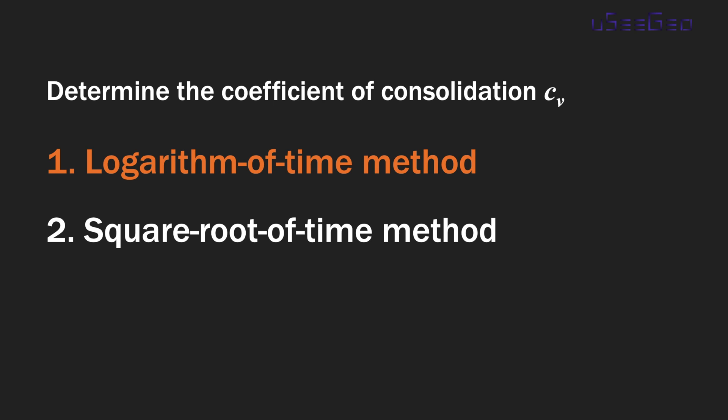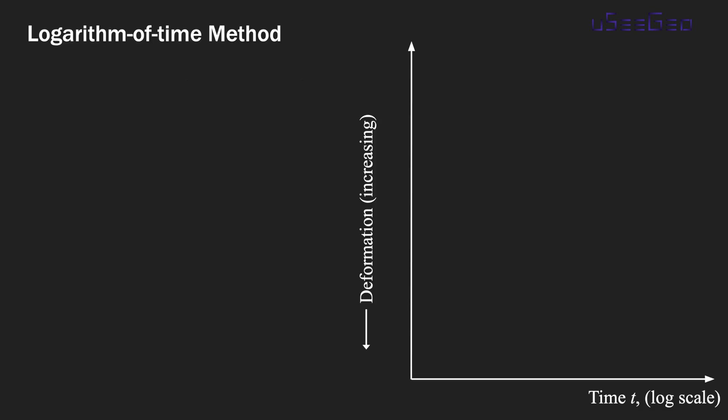In this video I'm going to talk about the Logarithm of Time Method. This is one of the two most commonly used methods to determine the coefficient of consolidation, cv, from a 1D consolidation test. For this method, you first want to plot your consolidation test data in terms of deformation versus time in log scale, with deformation on the y-axis in linear scale and time t on the x-axis in log scale.